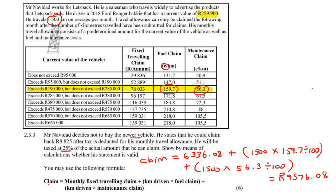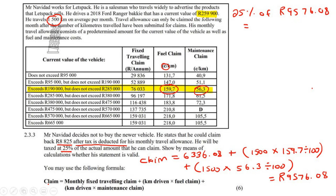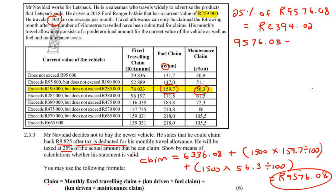Now we account for the 25% tax, since Mr. Navidad states he could claim back 8,825 after tax. We need to deduct 25% from 9,576.08. 25% of 9,576.08 — remember 'of' means multiply — equals 2,394 rand and 2 cents. Subtracting: 9,576.08 minus 2,394.02 gives 7,182.06. That is how much he would actually be able to claim back. Since he said it would be 8,825, the statement is not valid.